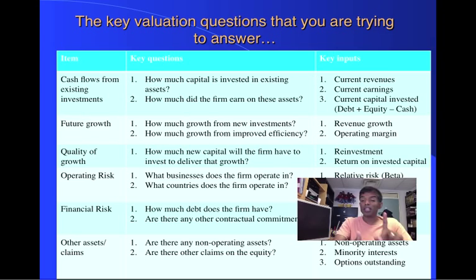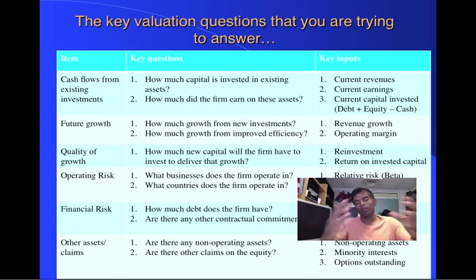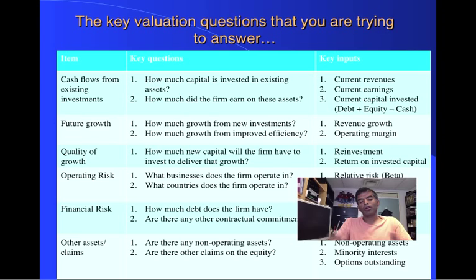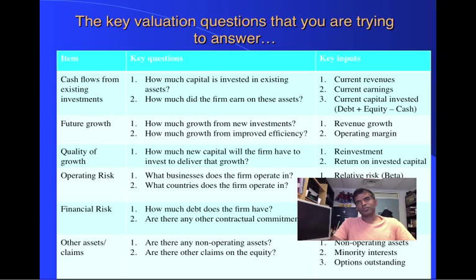On risk measures, I'm looking for some measure of relative risk — you can call it beta. I'm looking for what equity risk premium to attach given the different countries the company operates in, and some measure of the cost of capital. On the debt issue, I'm looking at traditional debt as well as lease commitments, converting those into a debt ratio and a cost for that debt. There's also final mopping up: companies often have holdings in other companies — minority or majority holdings — assets that haven't been counted, and other claims on equity such as employee options, convertibles, or warrants. Because if I'm a stockholder in this company, I've got to factor those claims in.